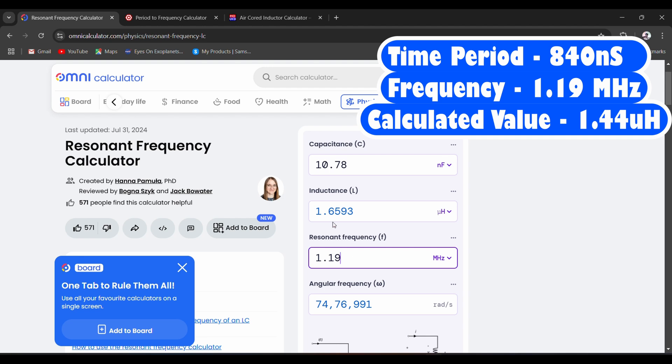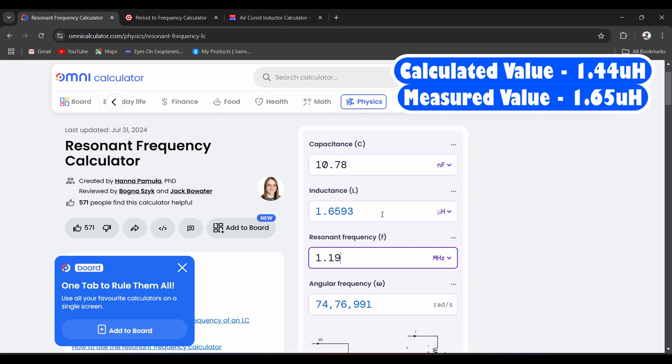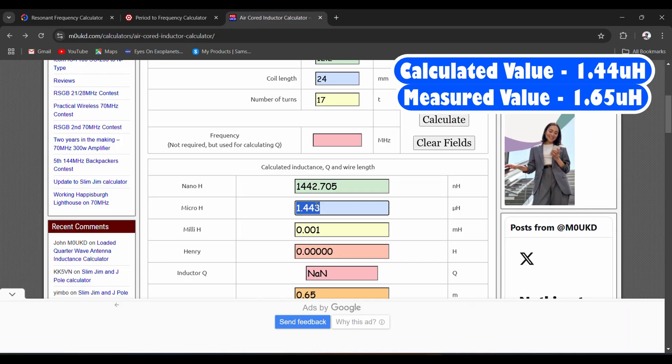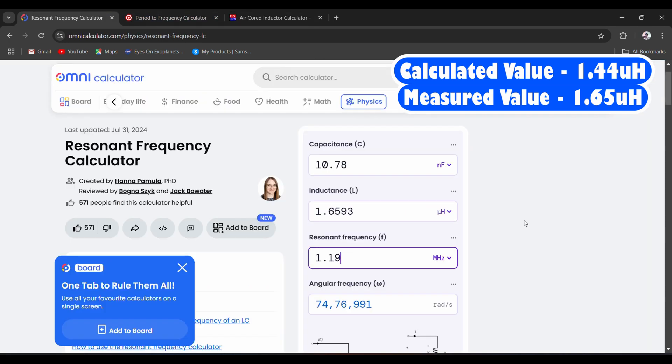Okay, it's 1.6593 microhenry, which is again very close to here, 1.443 microhenry. So as you can see, you can actually measure it in a very good precision. Let's try one last value.